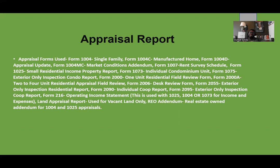Form 1004 is used for a single family. Form 1004C is used for a manufactured home. Form 1004D is an appraisal update — usually an update to a 1004 or 1004C. If you're working on an appraisal that is 'subject to' — meaning subject to an inspection or a repair that needs to be done — we'll use the 1004D to properly report that information.